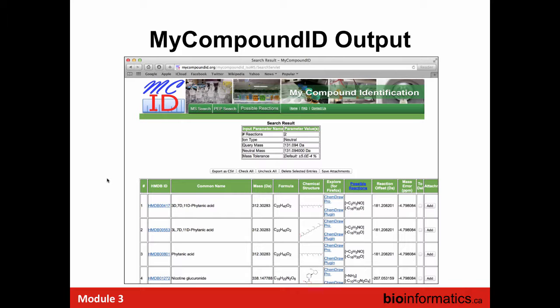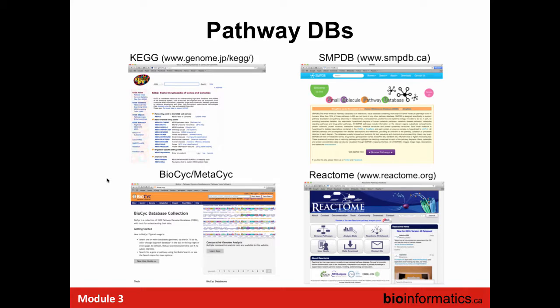Now switching gears to pathway databases, which are the link between the genome, the proteome, and the metabolome and physiology. This is at some level why metabolomics often sits at the top of the informatics pyramid. Talk to someone in genomics or transcriptomics and they barely know about KEGG, have never heard of Reactome, don't know what BioCyc or MetaCyc is. But if you're doing metabolomics, you have to know these resources. Has everyone heard of KEGG? If you haven't, you have to leave the room.